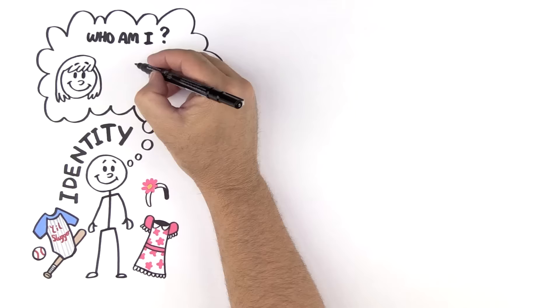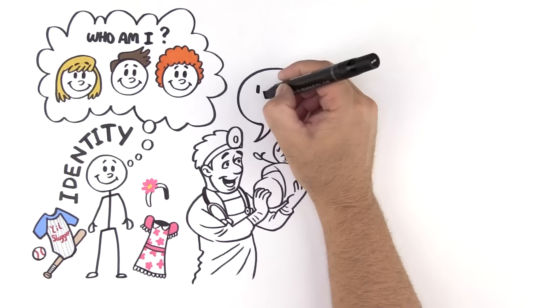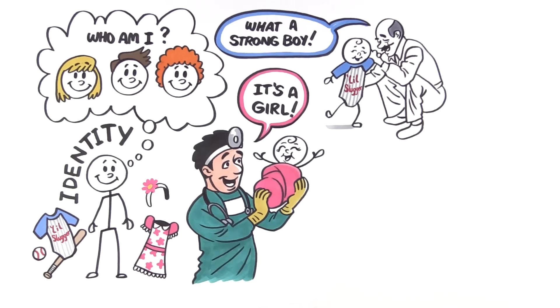Likewise, gender identity is shaped at birth when a doctor assigns gender. Grandparents then begin to describe boys as having strong cries or gift girls pink headbands with bows.